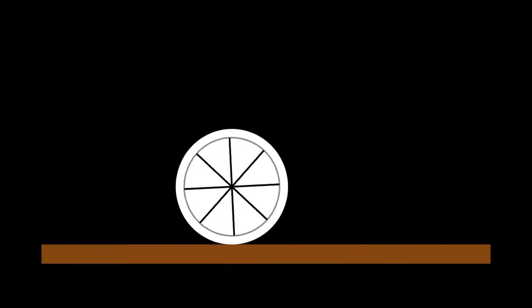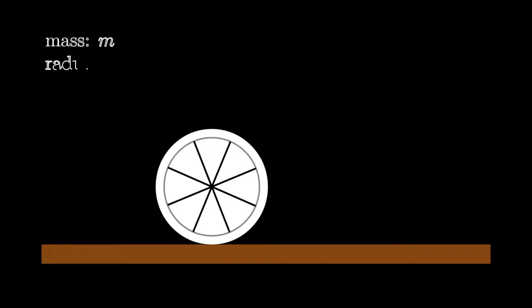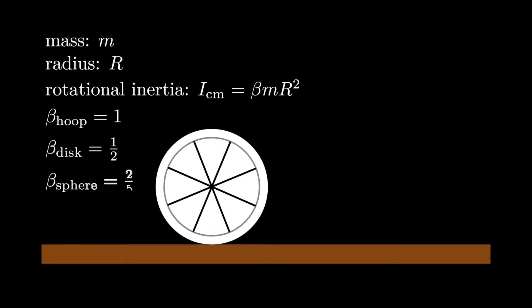In this video, we're going to analyze what happens when an object is launched with arbitrary translational and rotational velocities on a flat surface in the presence of friction. We'll assume the object has mass m and radius r, and for convenience, we'll write the rotational inertia about the center of mass in terms of a numerical parameter we'll call beta that lies between 0 and 1. A hoop, for example, has beta equal 1, while a disk and a sphere have values 1 half and 2 fifths, respectively.